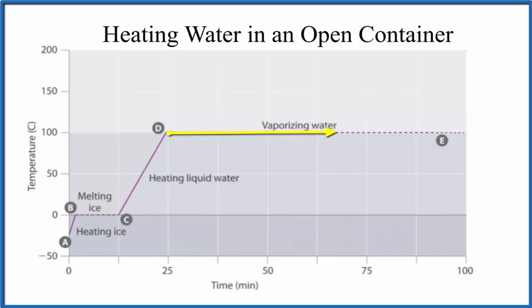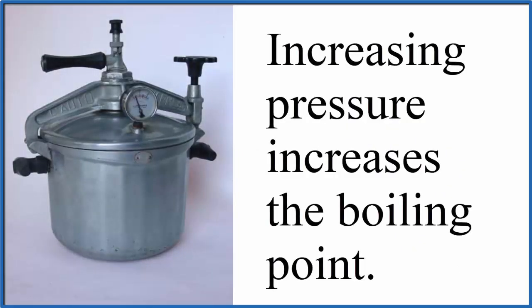But if we increase the pressure, we can make water boil at a higher temperature. That's what a pressure cooker does. The steam can't escape and the pressure builds up inside. Then the water can boil above 100 degrees Celsius.